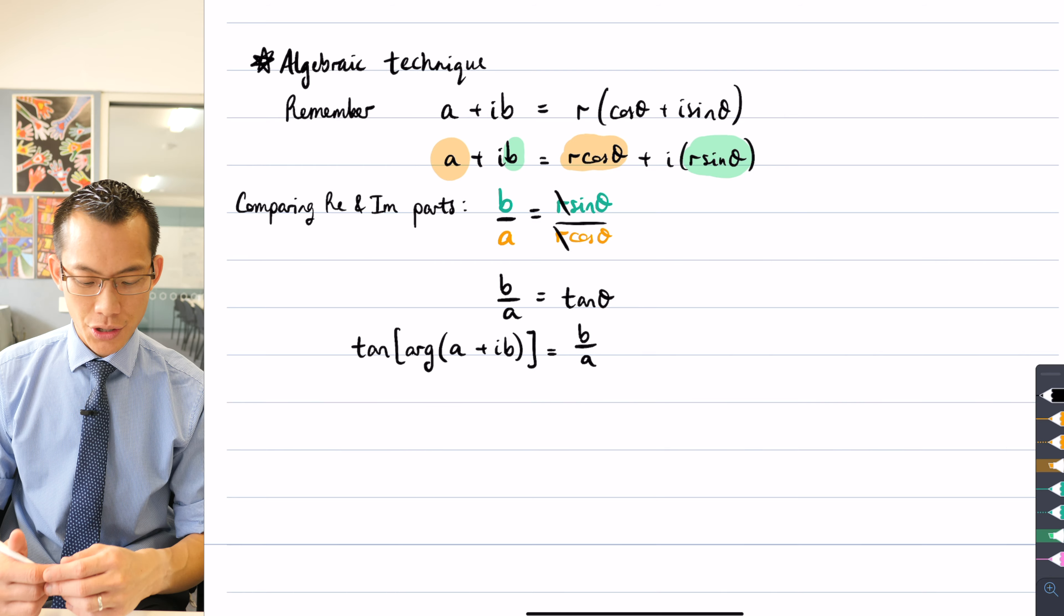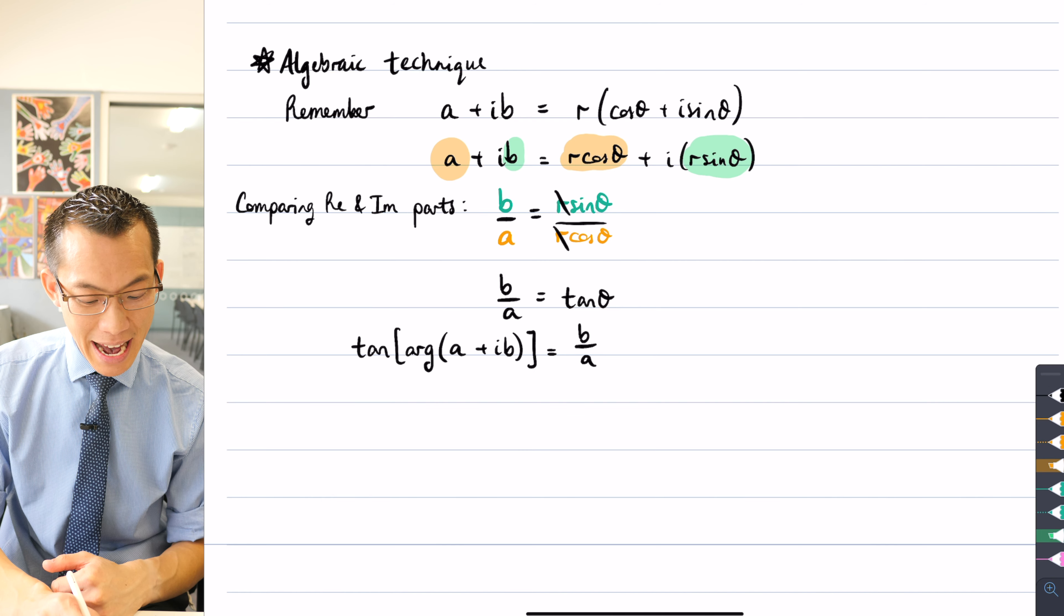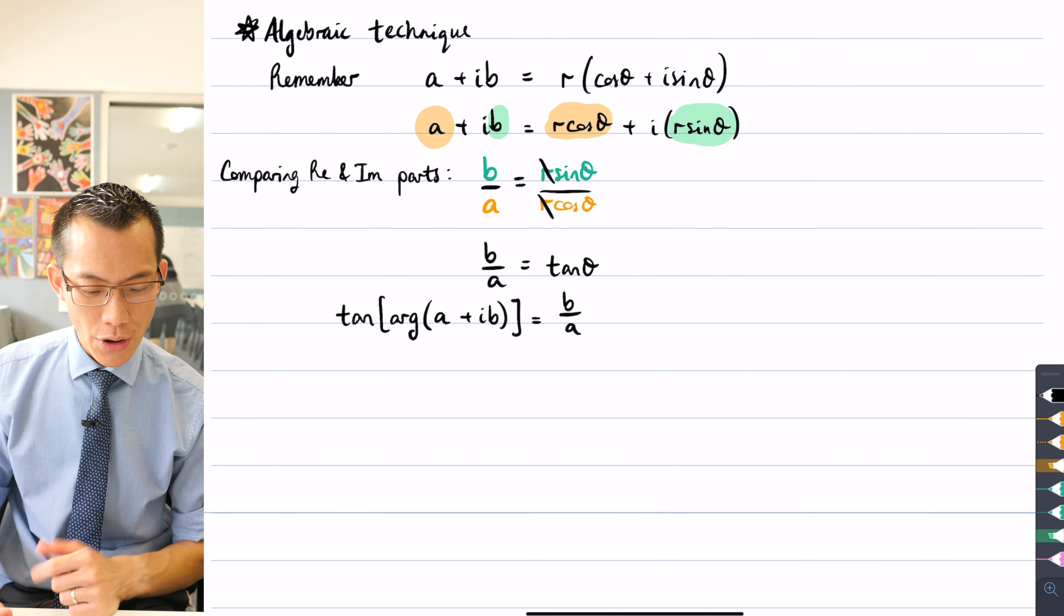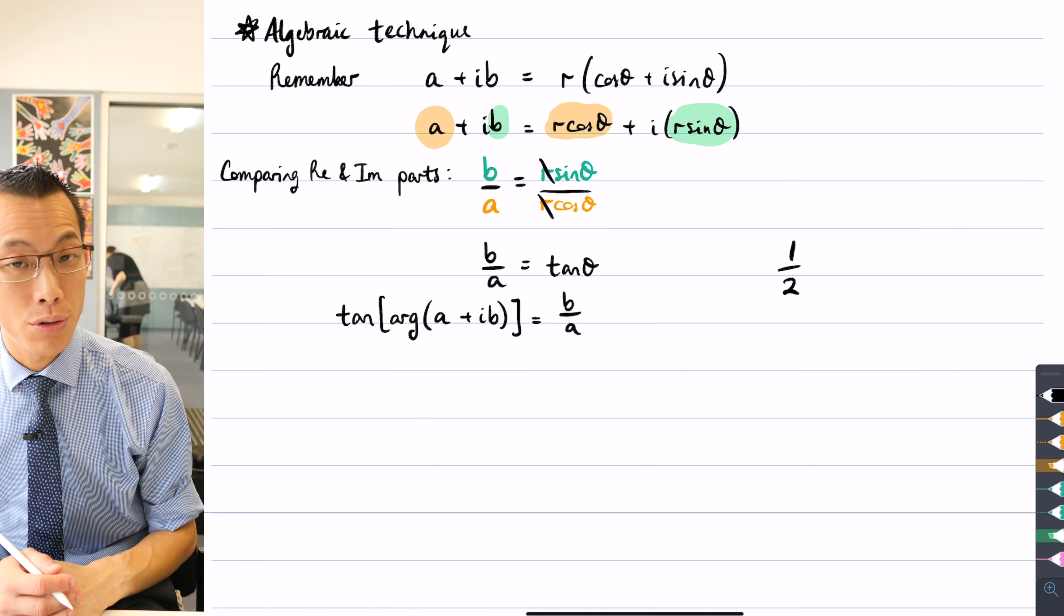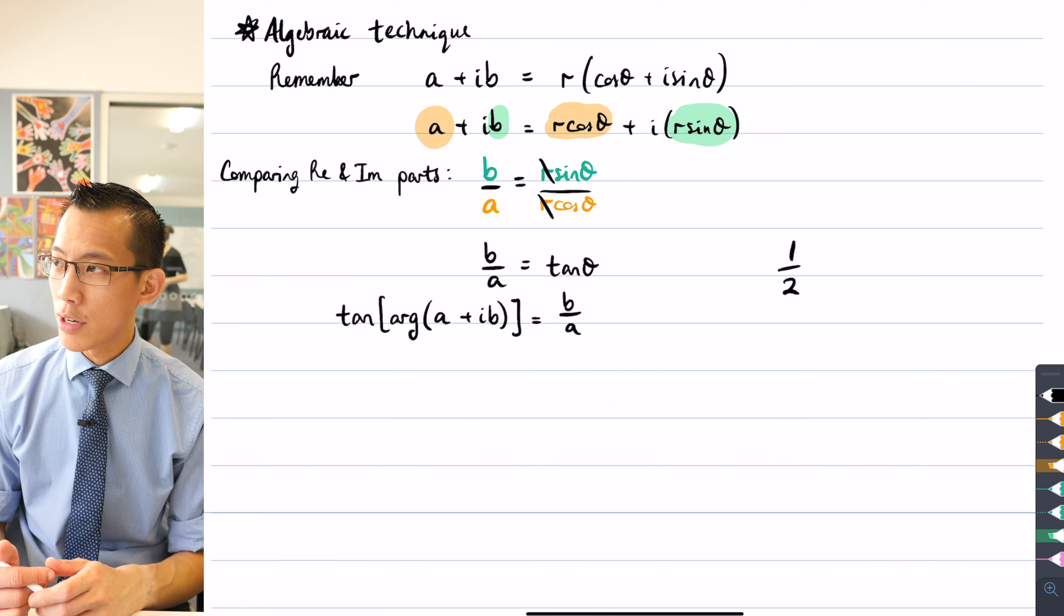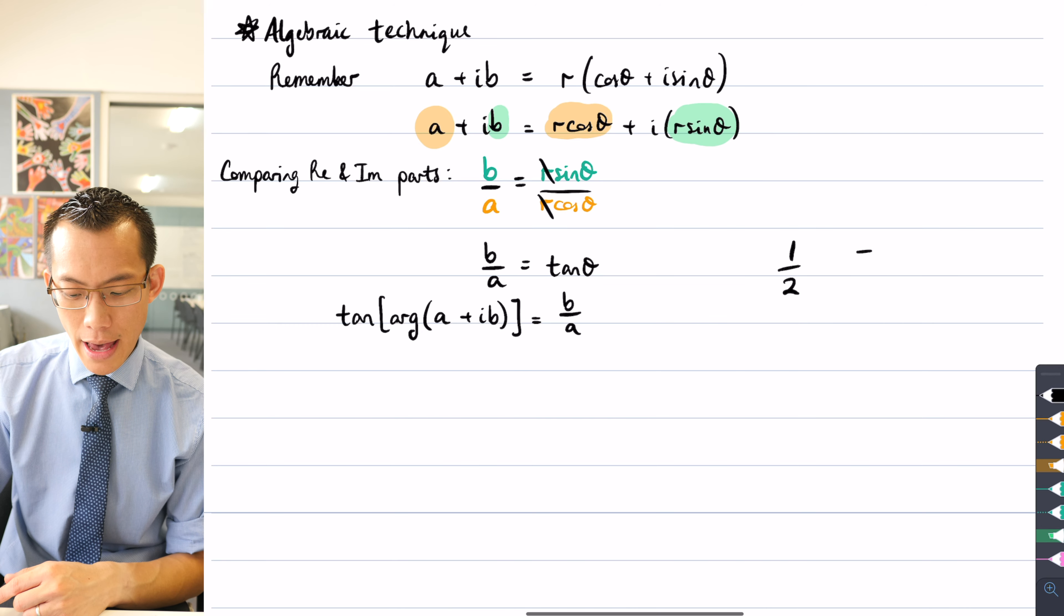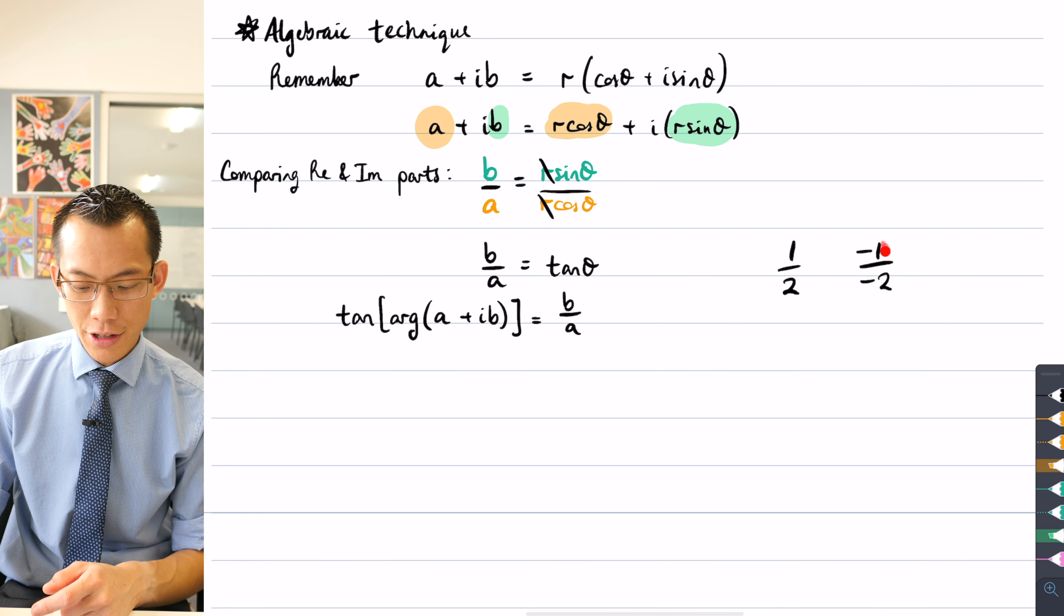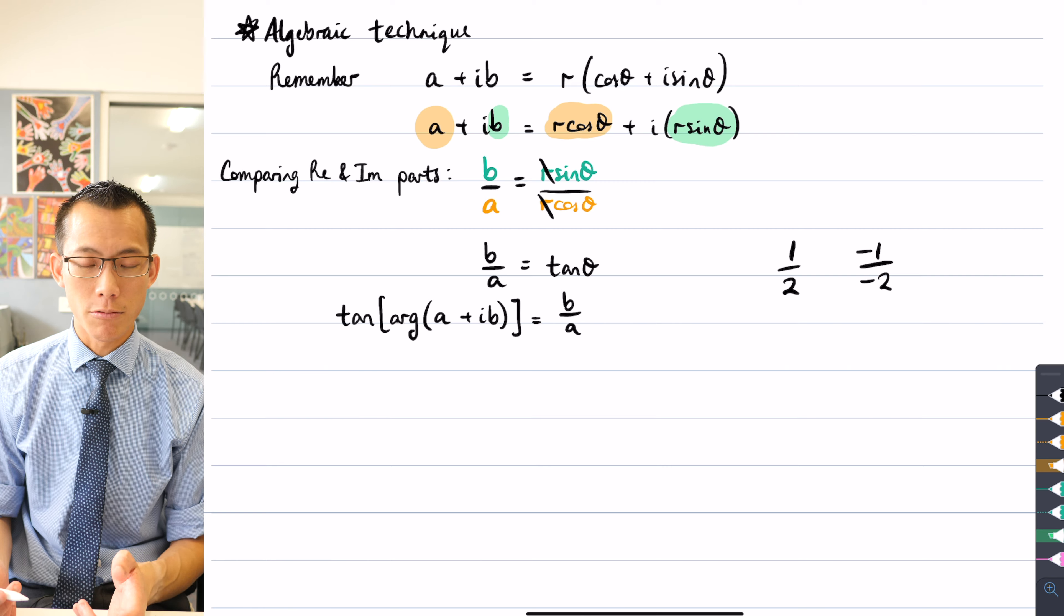At this point I want to remind you that we strenuously cautioned you in using tan inverse to find out what the argument was. Because if, for example, you had some complex number and B over A was equal to 1 over 2, if you did tan inverse of that you would get an angle out, you would get an argument and it would be in the first quadrant. But if you had a different complex number and it was negative 1 over negative 2, if that was the imaginary and the real components on the numerator and the denominator, if you put this into tan inverse you get exactly the same result.